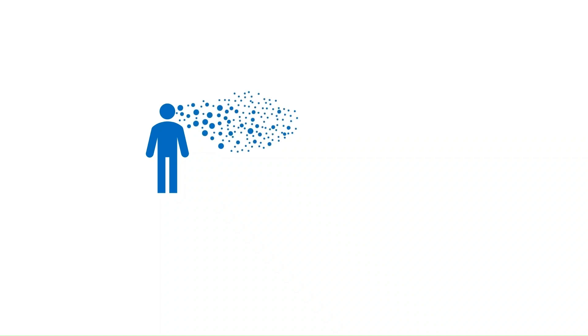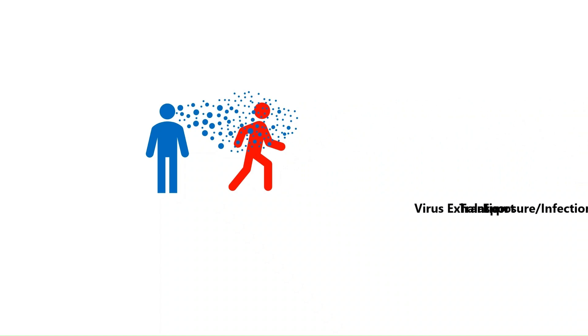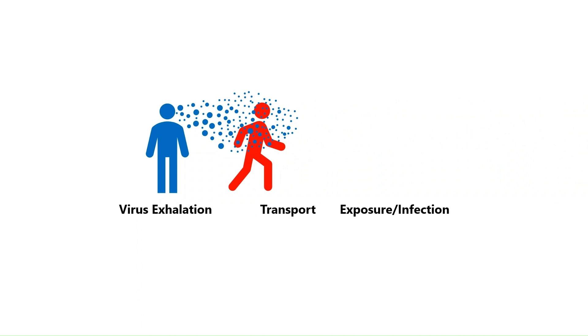To understand how humidity affects airborne viral transmission, we first need to define what we're talking about. For airborne transmission to occur, an infected person must exhale virus-containing aerosol that is then transported through the air and inhaled by a non-infected person — a straightforward three-step process: exhalation, transport, exposure. But it's really not simple at all. For example, there's the issue of distance: exhaled aerosol is initially in a plume, and understanding that plume's size and how it evolves with environmental conditions is its own entire area of research.